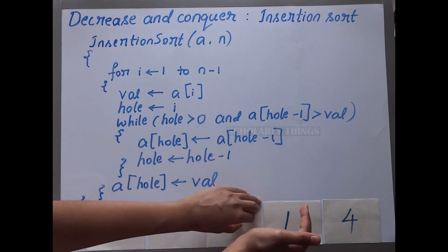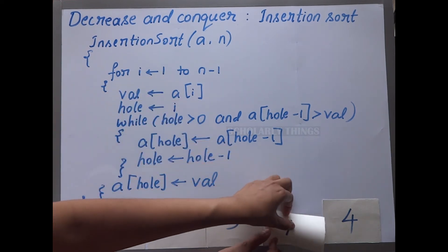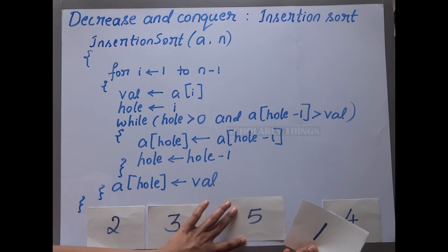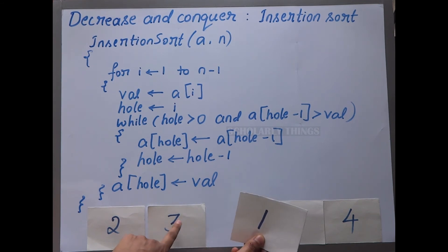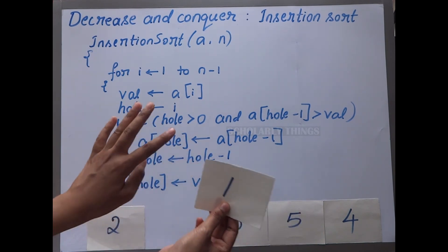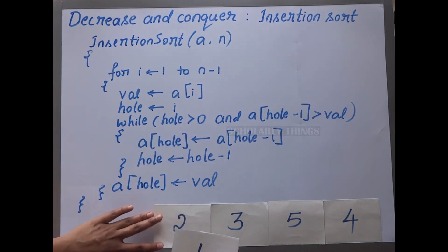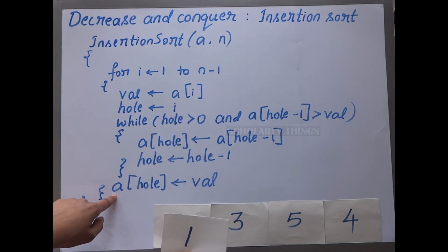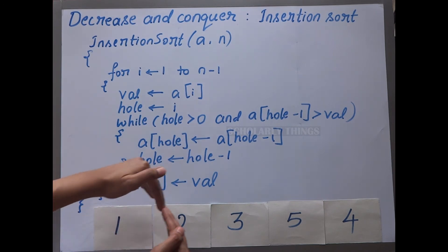Now 2, 3, and 5 are sorted; 1 and 4 are not. We go to the next iteration, i equal to 3. We take out value 1 and compare it with hole minus 1, which is 5 — yes, 5 is greater, so we shift. Next, hole minus 1 is 3 — 3 is greater, so we shift again. Then hole minus 1 is 2 — 2 is greater, so we shift again. The hole reaches position 0, the condition fails, we exit the while loop, and assign value 1 to a[hole].